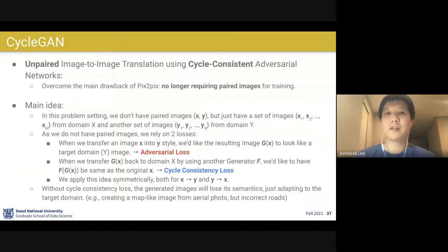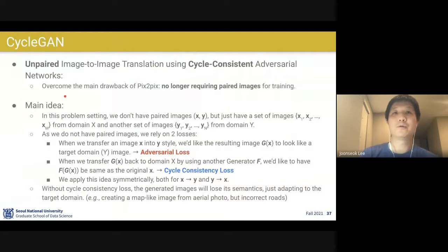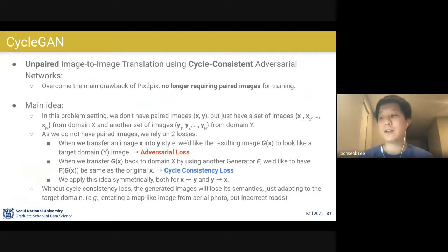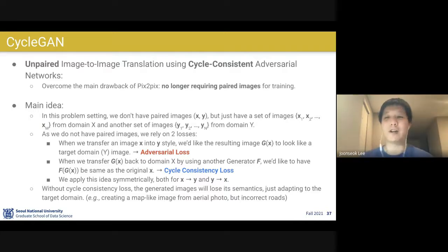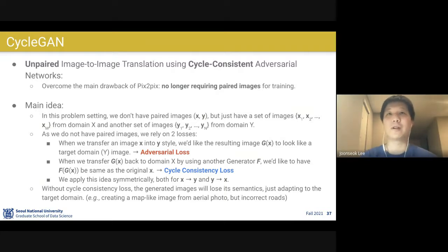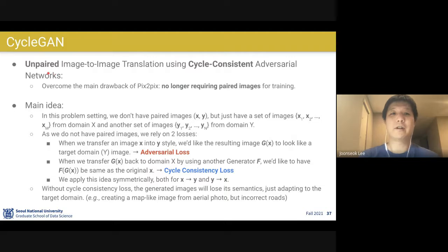So we're going to see another approach for situations where paired images are unavailable. I'm going to show two models: one is called CycleGAN and the other is called DiscoGAN. Those two models are almost exactly the same — the general idea is identical, only the implementation details differ slightly. The goal of CycleGAN or DiscoGAN is unpaired image-to-image translation using cycle consistency.